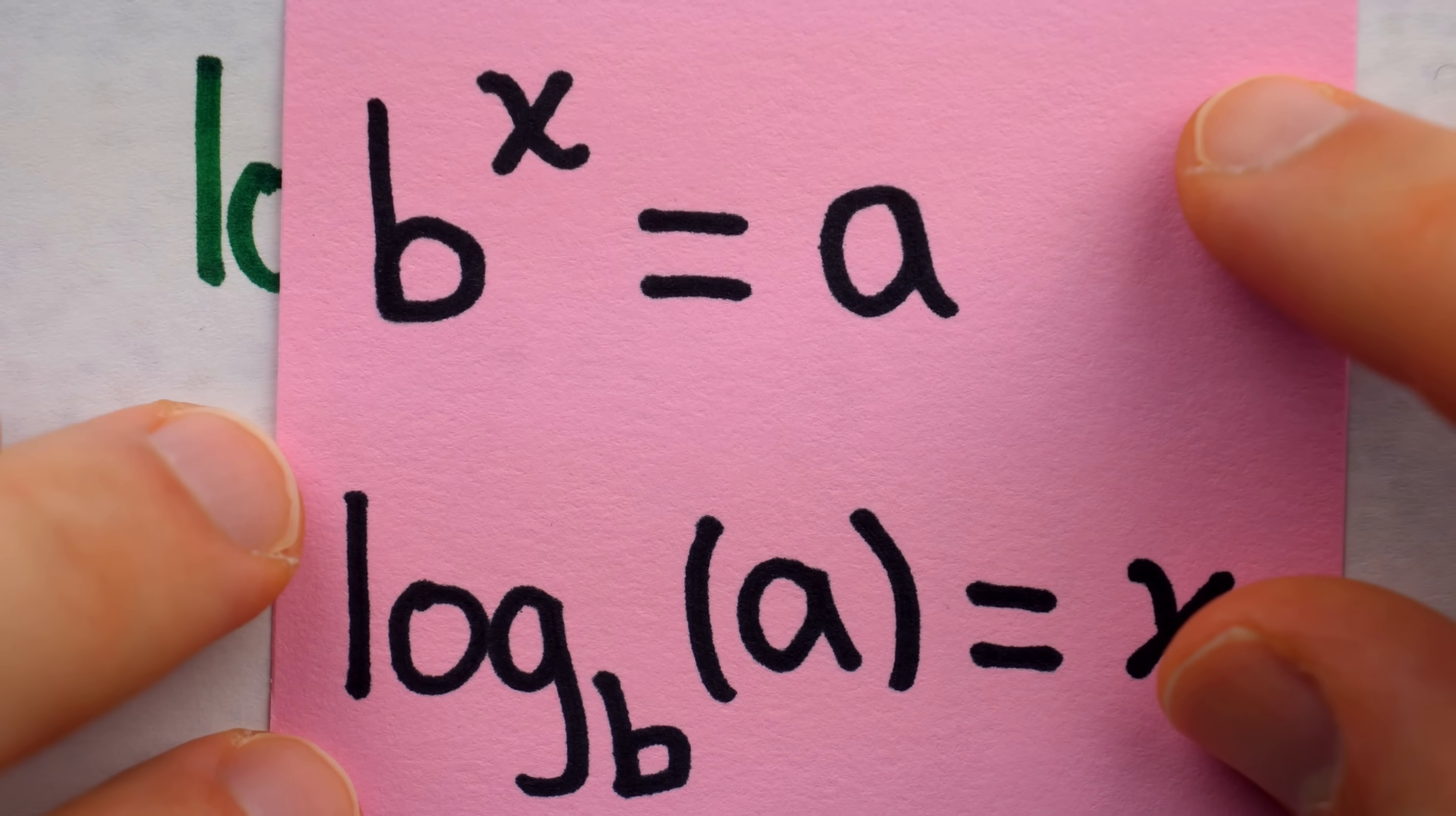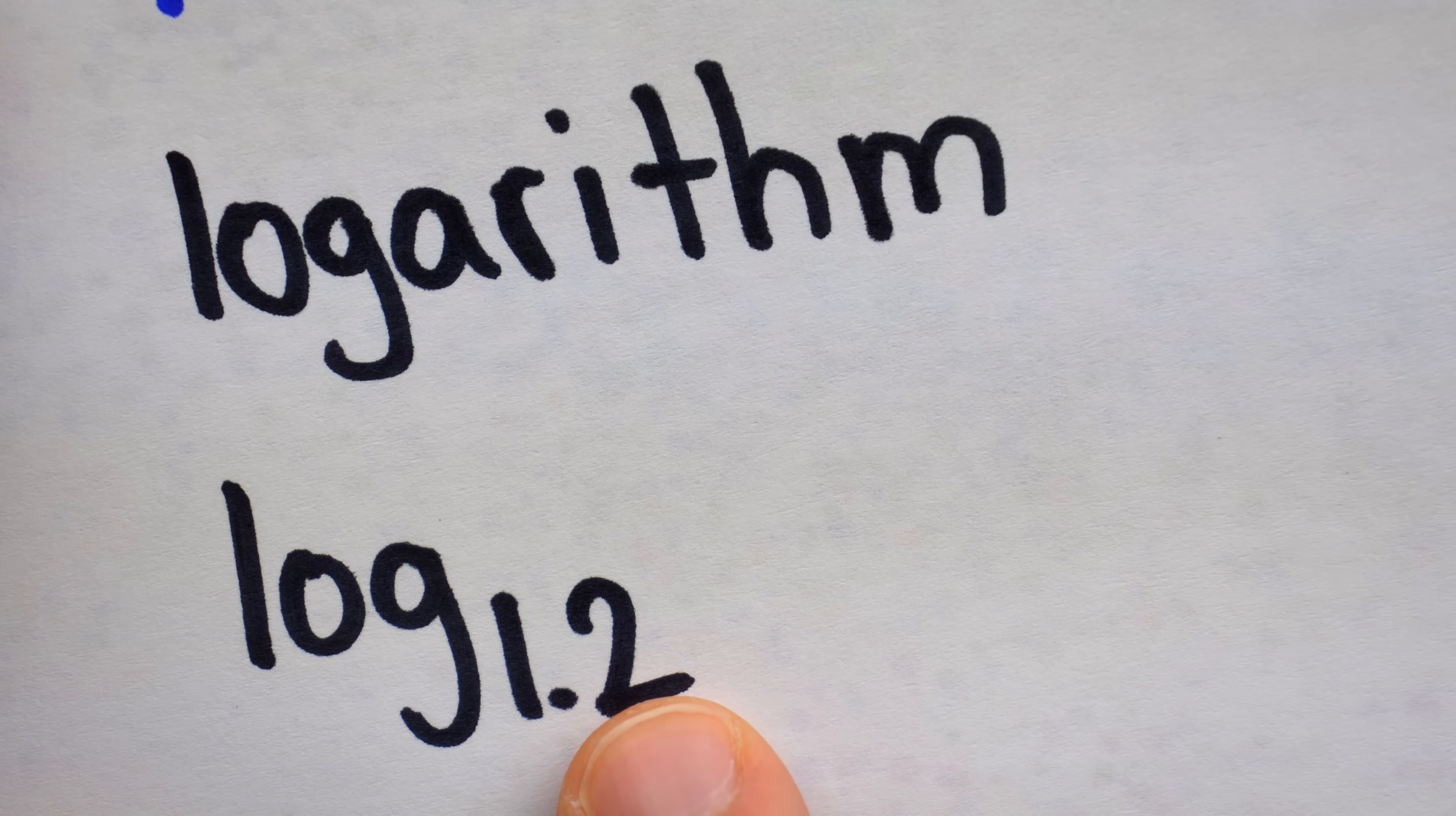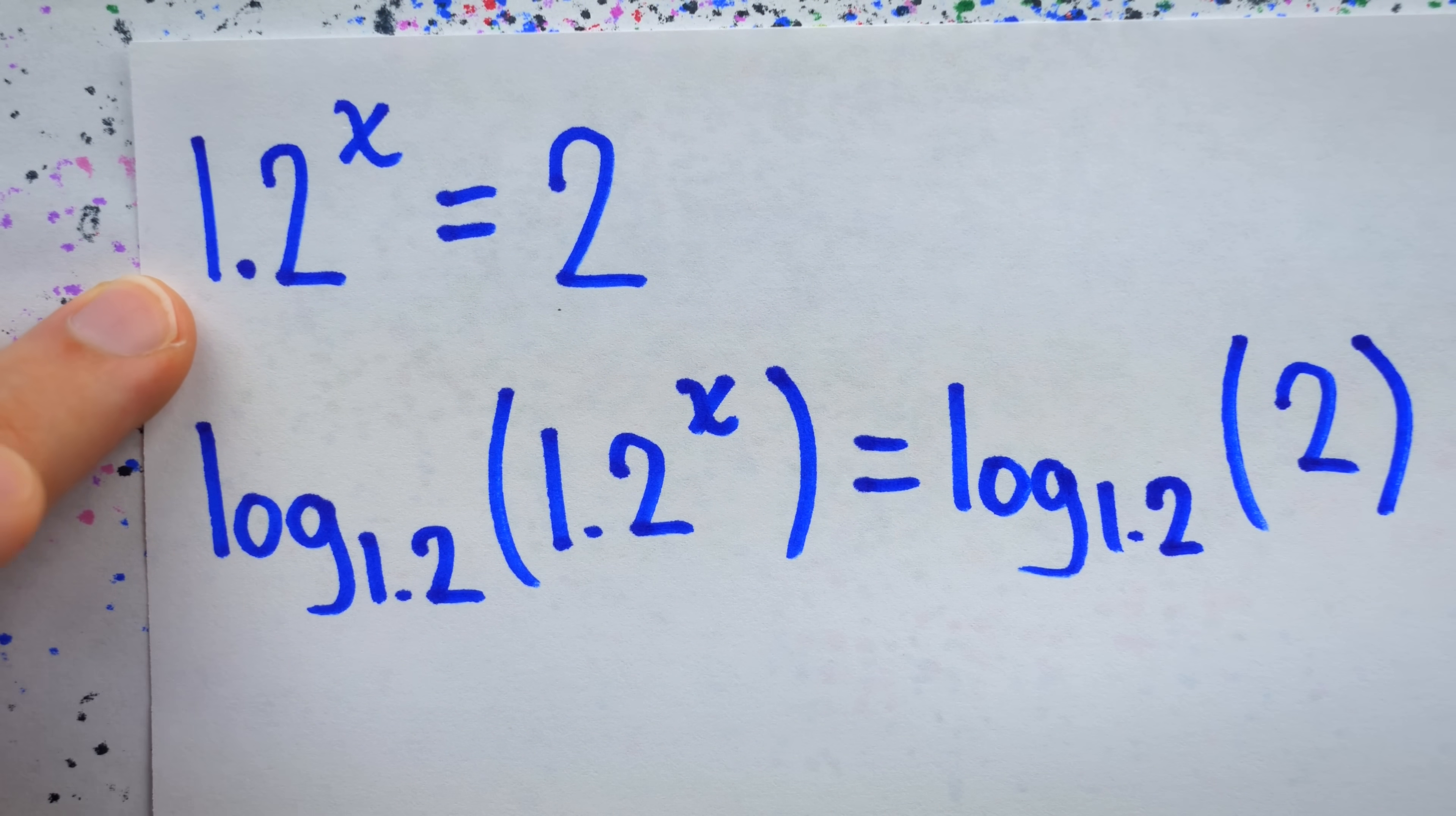And in general, if a base b raised to a power x is equal to a, then the log base b of a gets rid of the base and just gives us the exponent. So that's why we need to use a base 1.2 logarithm in order to solve this equation for x. So we take the base 1.2 log on the left side and take the base 1.2 log on the right side. We're doing the same thing to both sides of the equation.